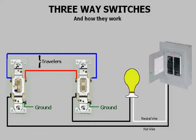When a person switches one of the three-ways, the light comes on. When he switches the other, the light goes off.